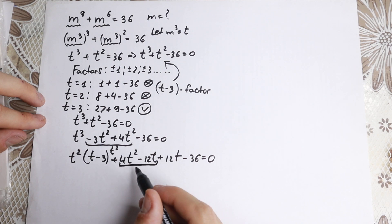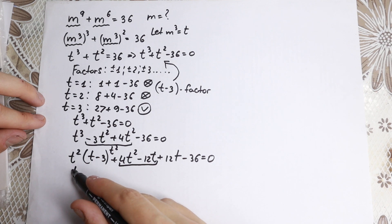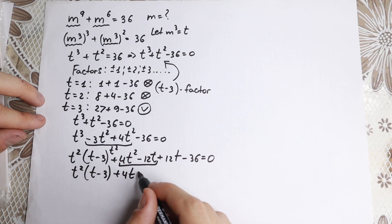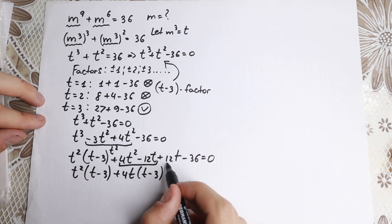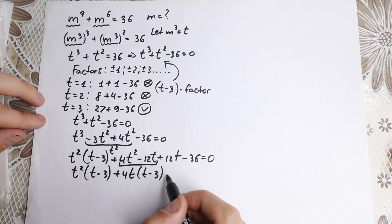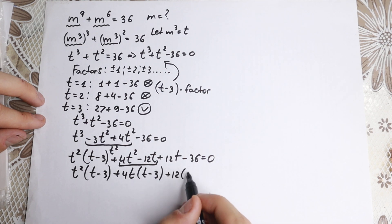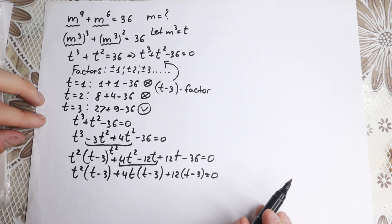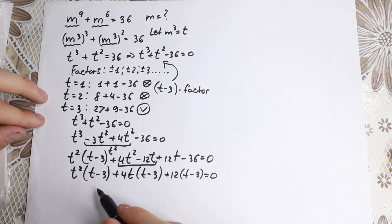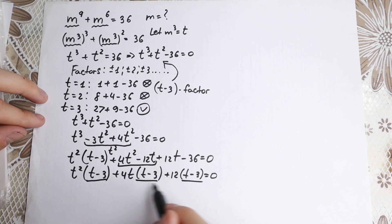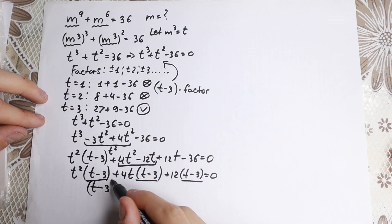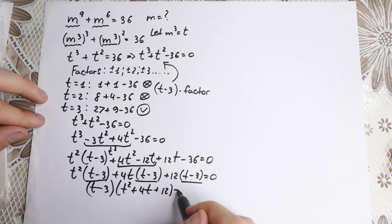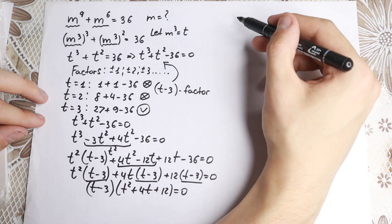Factoring from the first group: t-squared times (t minus 3). From the next group, factoring 4t gives 4t times (t minus 3). From the last group, factoring 12 gives plus 12 times (t minus 3). Now (t minus 3) appears in every group, so we factor it out: (t minus 3)(t-squared plus 4t plus 12) equals zero.